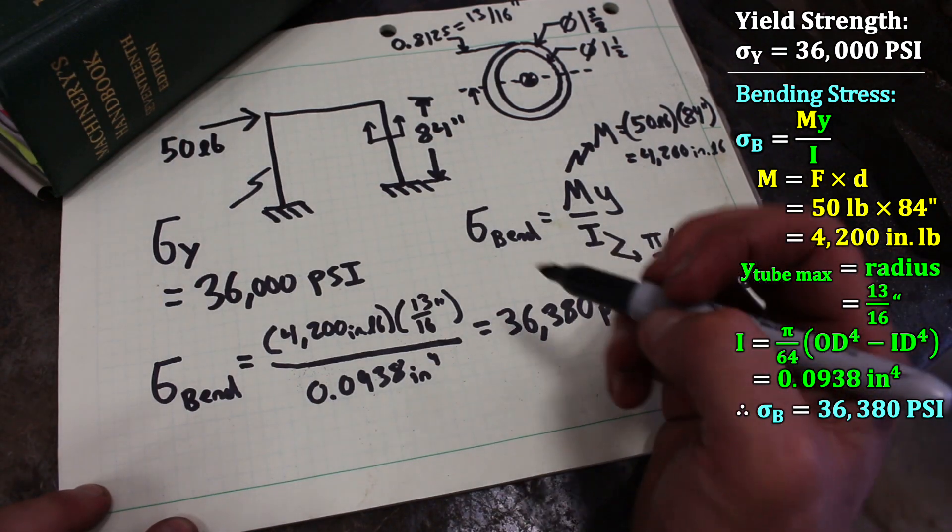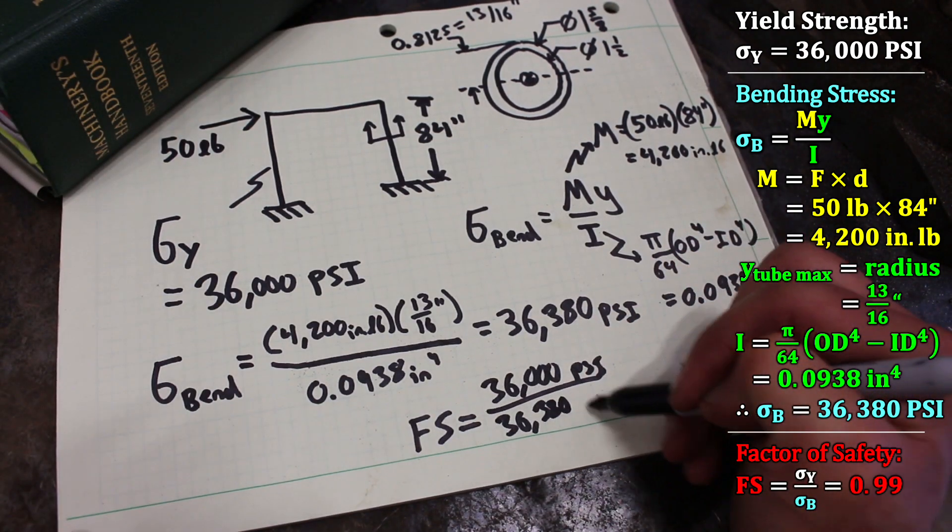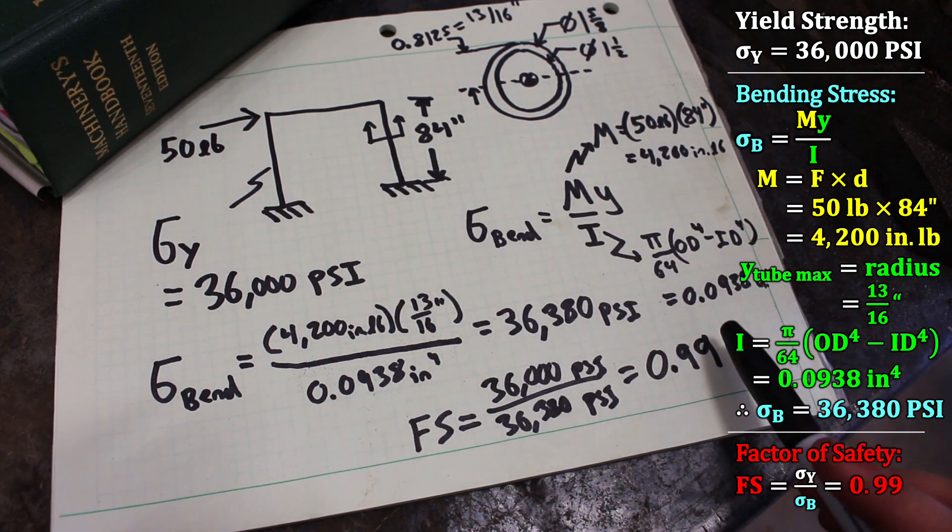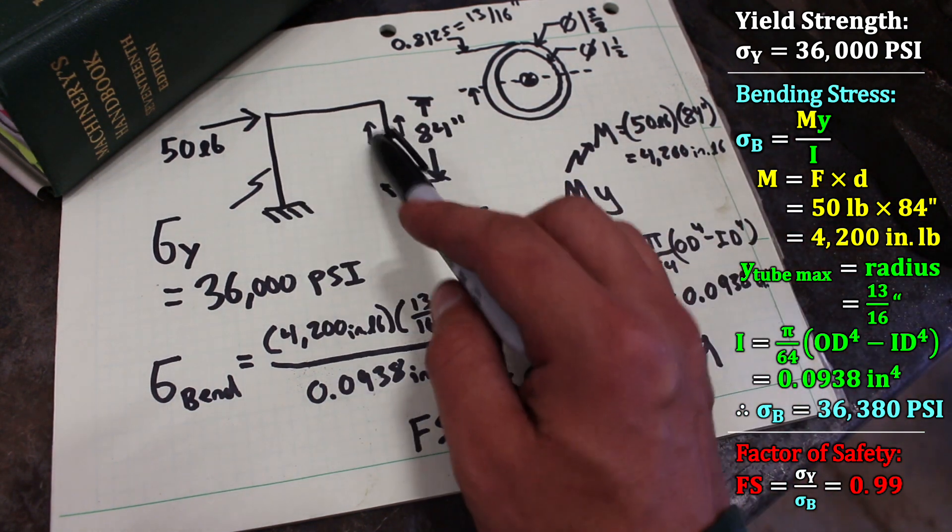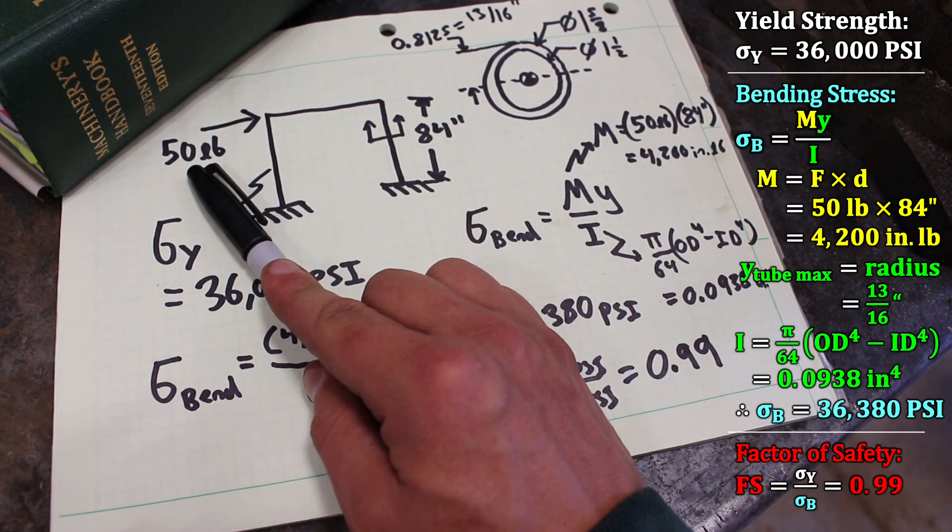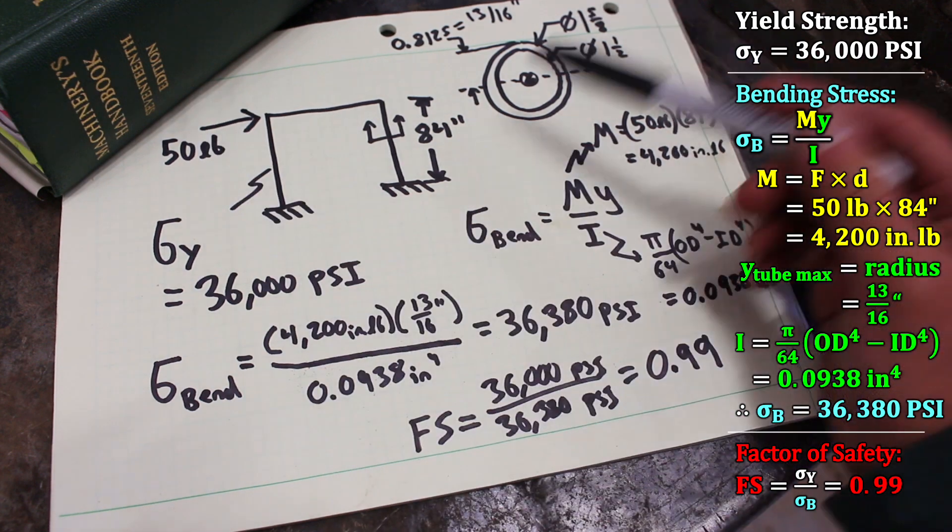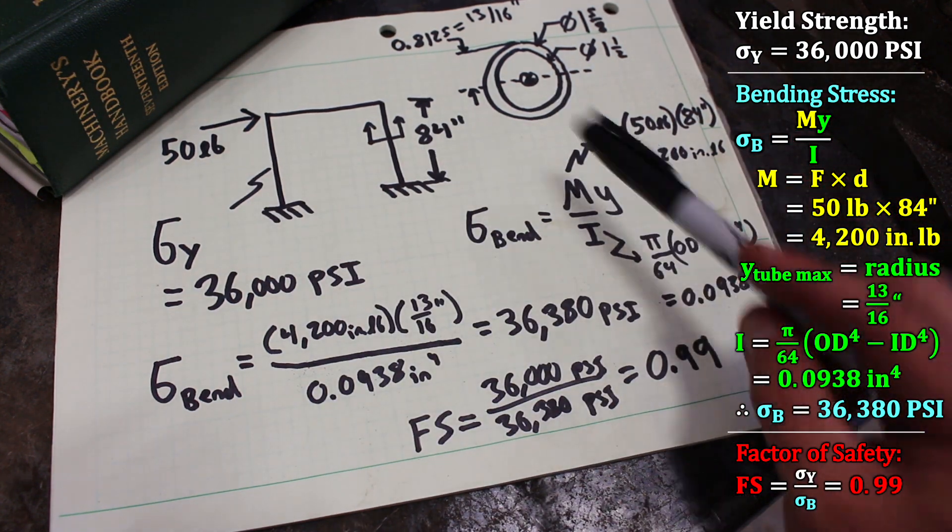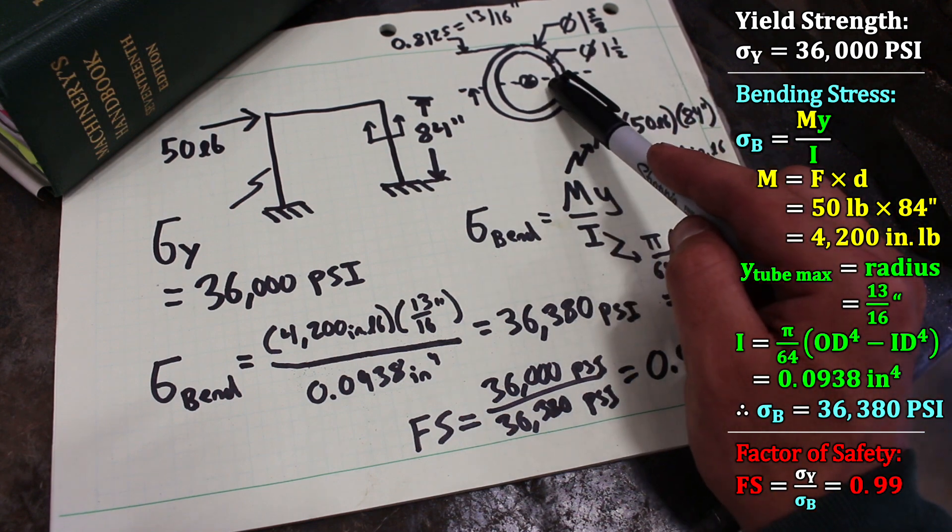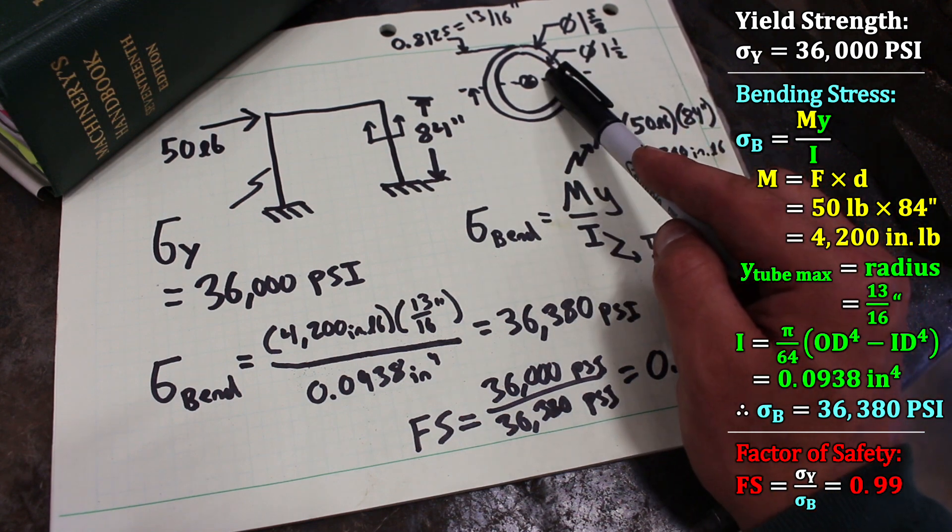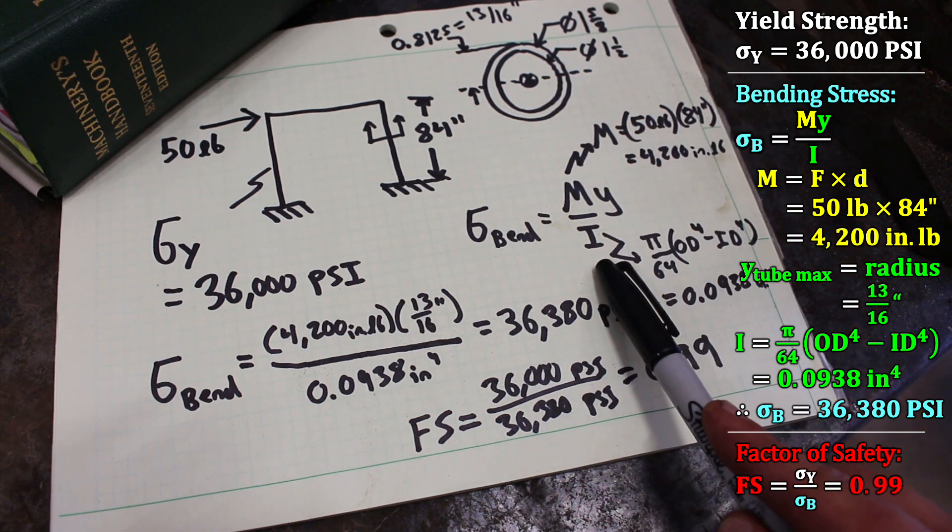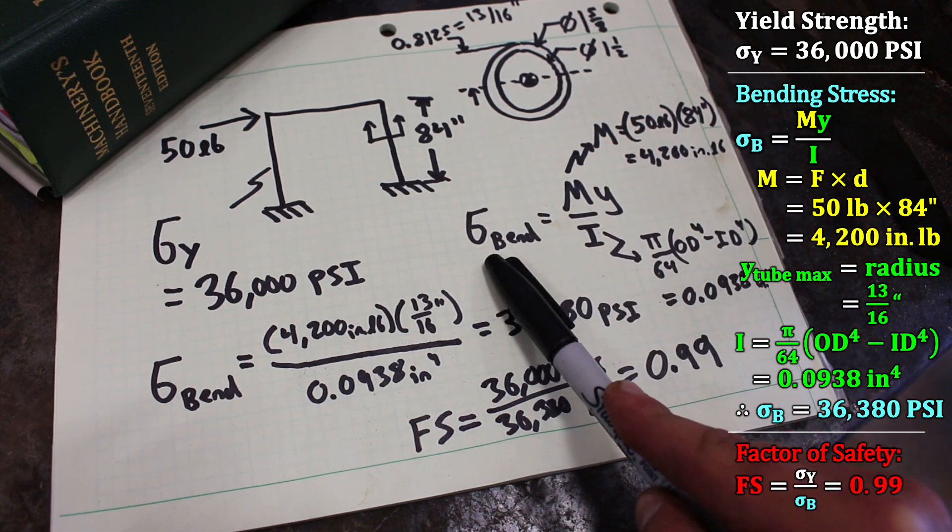So having done this calculation we see that our factor of safety is less than one. And so in the design stage we have a few different things that we can play with. We can either change the environmental conditions if possible so that we never have an applied load this great. We can change the geometry—if we made the leg shorter the moment term would be smaller. We can change the cross-sectional geometry with a thicker wall, for example. We end up with a larger area moment of inertia that would reduce our bending stress.